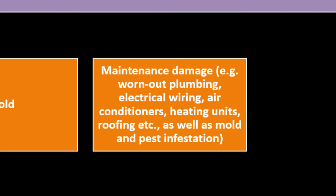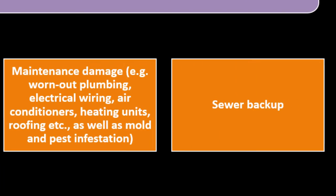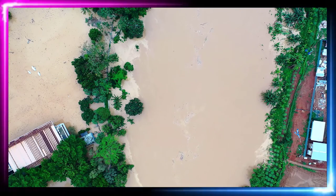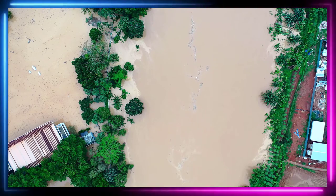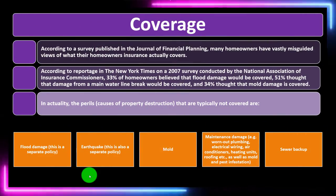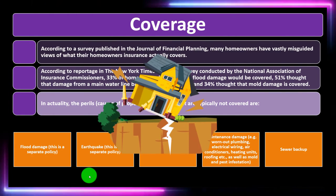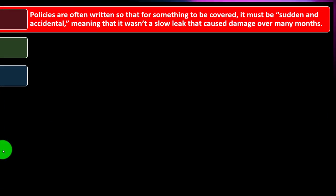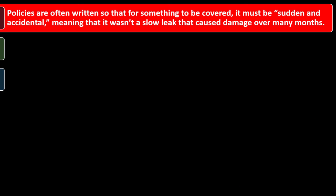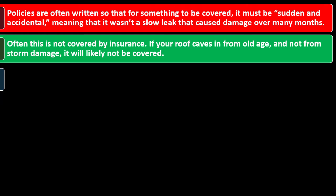If you're in an area with flooding or earthquakes, you may need additional coverage specifically for those, as earthquakes can be very difficult for insurers to measure. Policies are often written so that to be covered, something must be sudden and accidental — meaning it wasn't a slow leak that caused damage over many months. If there was a drip happening for 30 years, that's not sudden and accidental. Normal wear and tear generally won't be covered. If your roof caves in from old age rather than storm damage, it will likely not be covered.